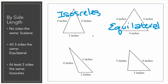Moving to the bottom. In this third triangle, our sides are two inches, four inches, and five inches. None of the sides are the same length. This is a scalene triangle.